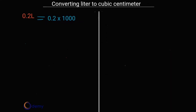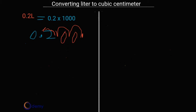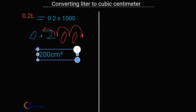So how do we multiply 0.2 by 1000? Since this is a decimal, we move the decimal point three places forward because we have 1000. Moving three places forward, we fill in the empty spaces with zeros. The new point ends up after the digits, and any value after it is zero, so we get 200 centimeter cubed.